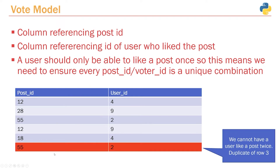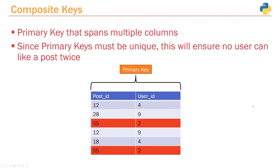What we can't have is a user liking a post more than once. You can see here user two liked a post with an ID of 55, but we can't have them do that again — it's a duplicate, and this shouldn't be allowed in our system. There are a couple of different ways to set up this requirement, but we're going to look at the simplest solution and learn about something called composite keys.